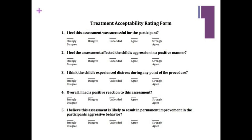Social validity was assessed at the end of the experiment using a questionnaire similar to Langthorne's and McGill's, with some modifications. It was given to the parents and teachers of the children to assess the social validity of the functional analysis and treatment procedures. The rating scale was classified as: strongly disagree, disagree, undecided, agree, and strongly agree.